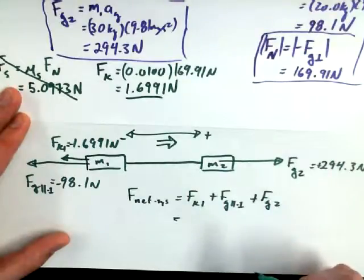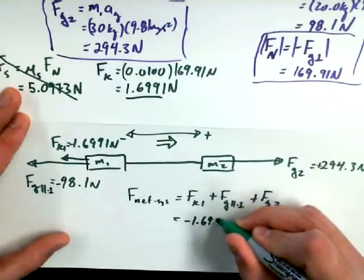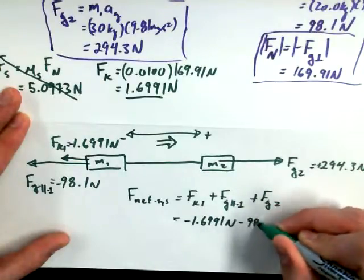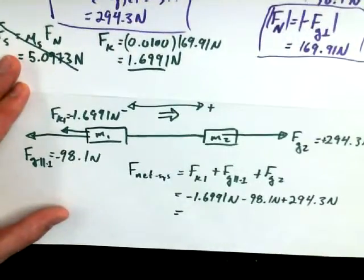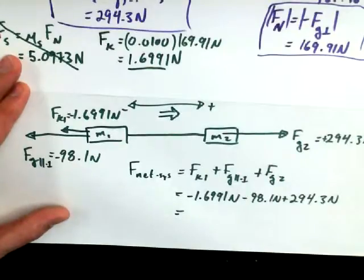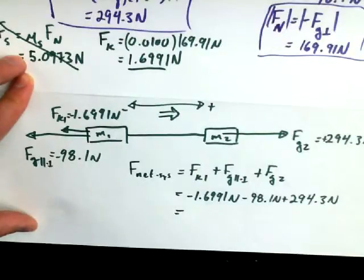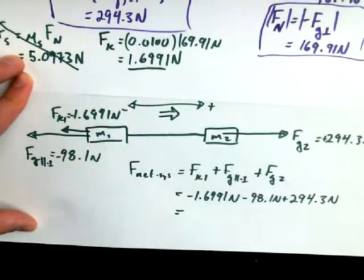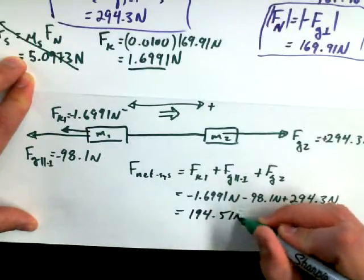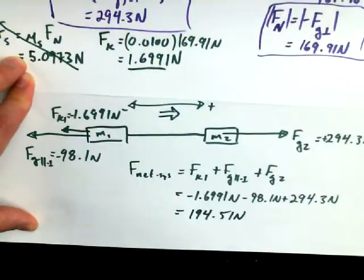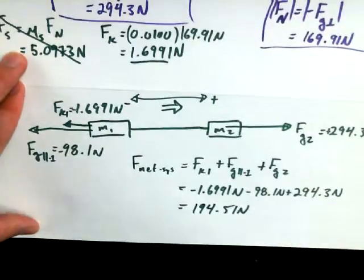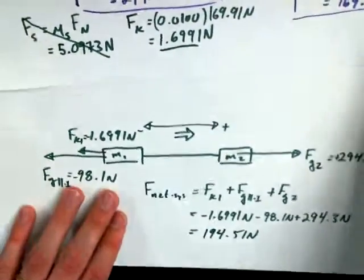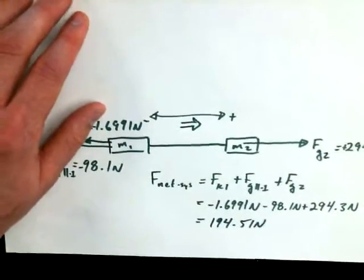Now, the problem we were trying to find was the acceleration of this system. So now I think we should find the F net for the system. F net for the system is equal to FK1 plus FG parallel for mass 1 plus FG2. And if we plug in all of our values, we'll get the net force for the system. 194.51 newtons. Does anybody else want to second that motion? 194.51 newtons sounds like a good net force.